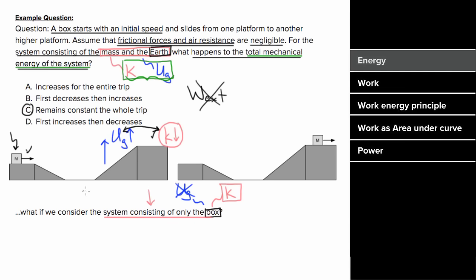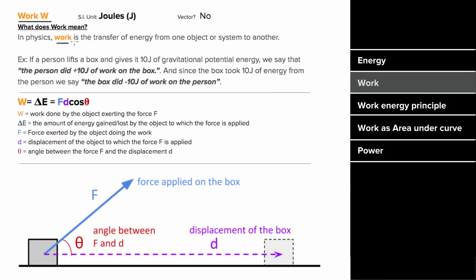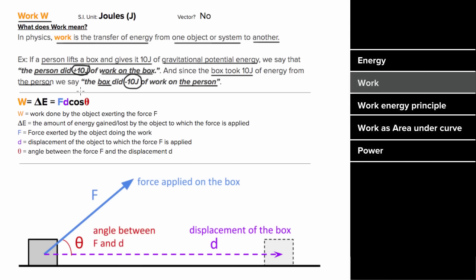How does it decrease? It decreases because now the earth is outside of our system, and the work that it is doing on the box is external work — it's taking away energy from the box. In physics, work is the amount of energy transferred from one system or object to another. If a person lifted a box and gave it 10 joules of gravitational potential energy, we'd say that person did positive 10 joules of work on the box. But since the box took 10 joules of energy from that person, we'd say the box did negative 10 joules of work on the person. So you can find the work done if you can determine the amount of energy that was transferred.